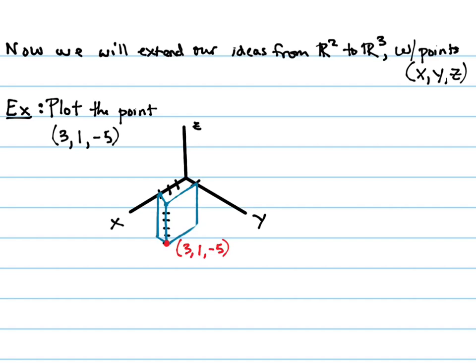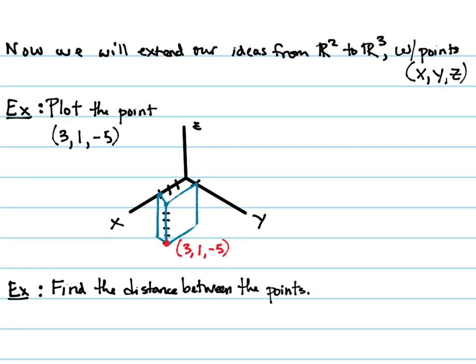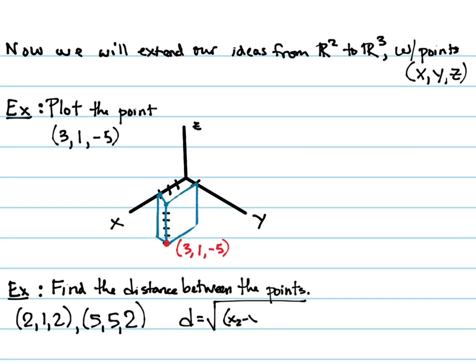Several things that we did back in two-space in algebra — somewhere you probably did in middle school or early high school — are some of the components of things we're going to do, but now in three-space. The next one we're going to look at is distance. We're going to find the distance between the points 2, 1, 2 and 5, 5, 2. In two-space, what's the distance formula?